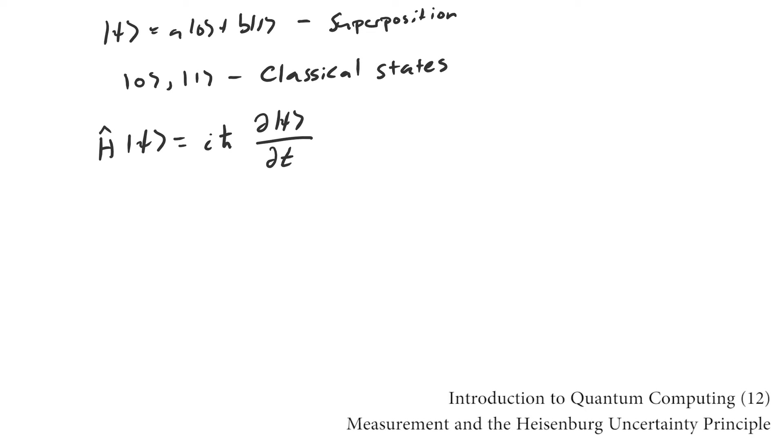When the state vector collapses, it doesn't do so arbitrarily. It collapses to the state 0 with probability equal to the squared magnitude of the complex number scaling the state 0. And it collapses to the state 1 with probability equal to the squared magnitude of the complex number scaling the state 1.